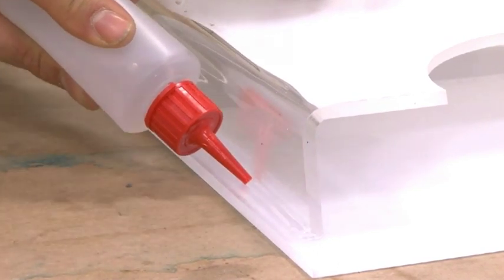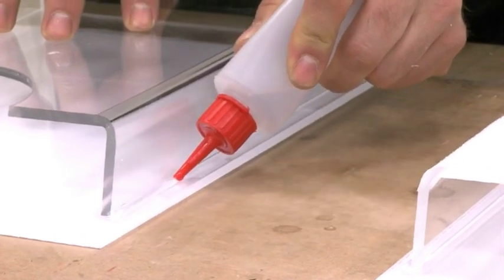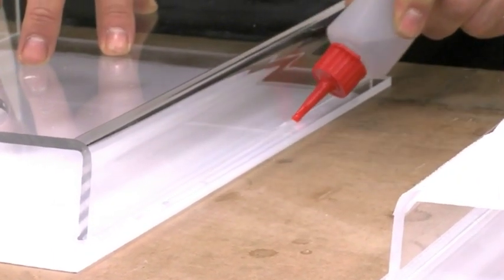Acrycast and Acryglass XT can also be bonded to other materials, such as aluminium composites, using Simpson Prep M Adhesive.